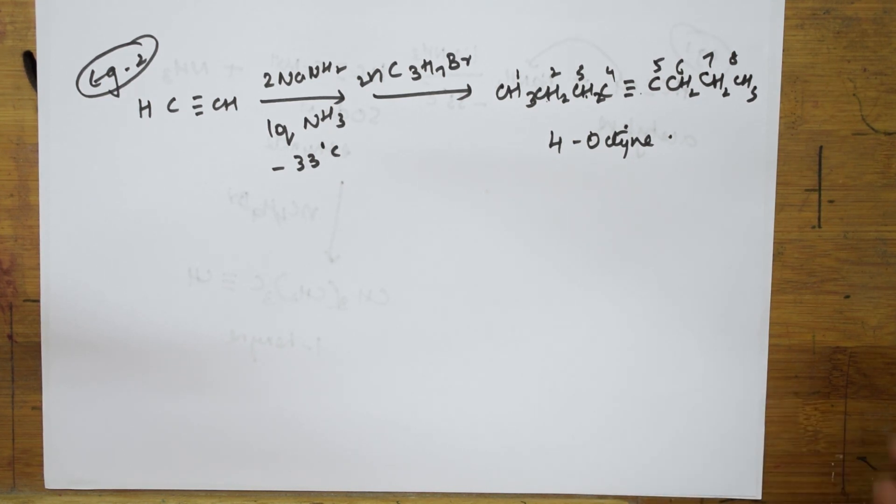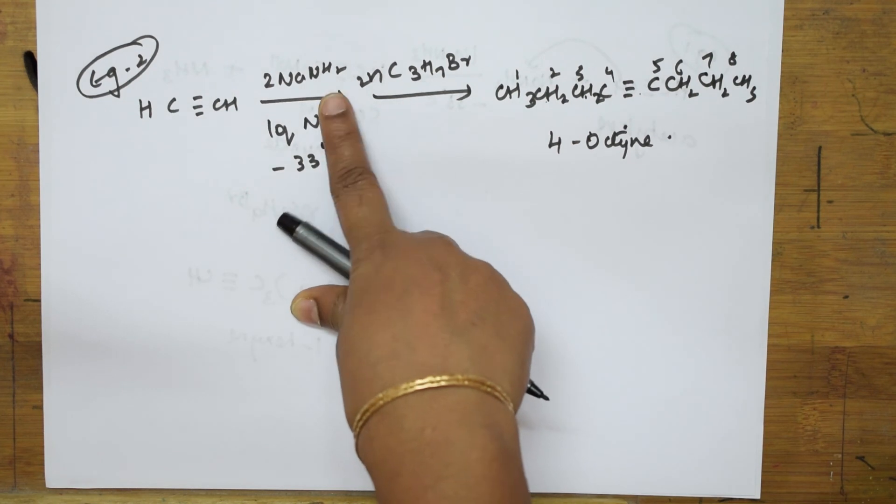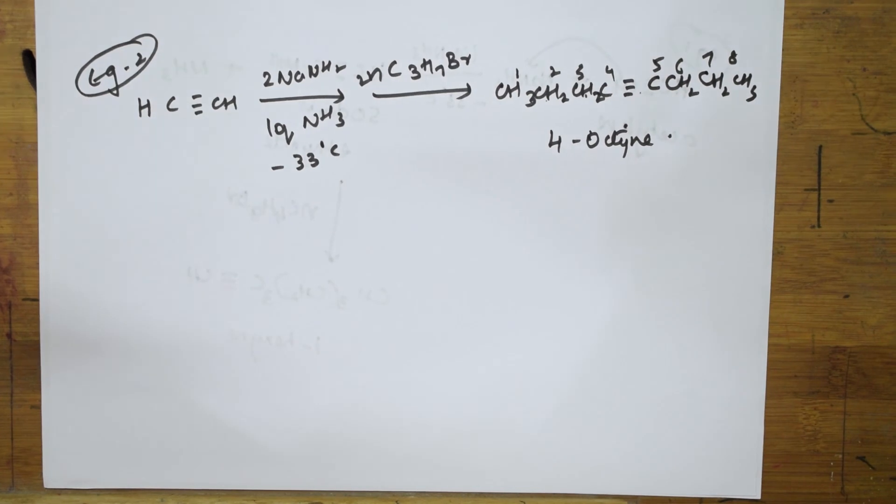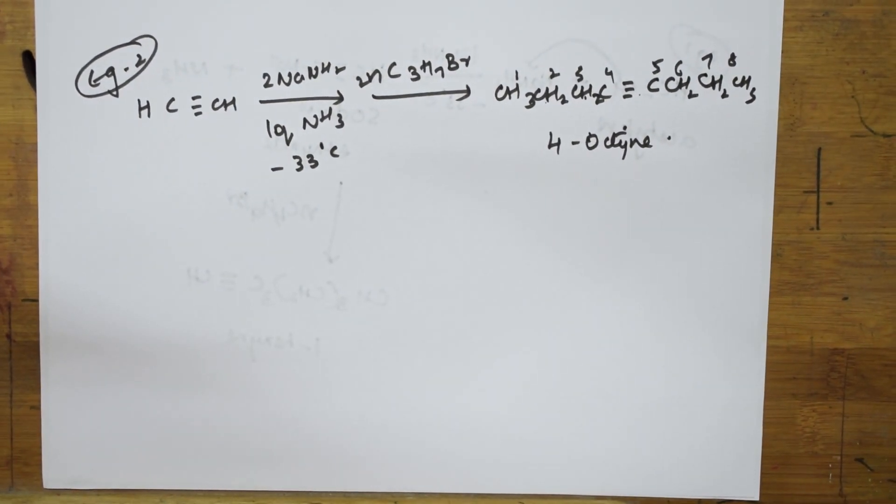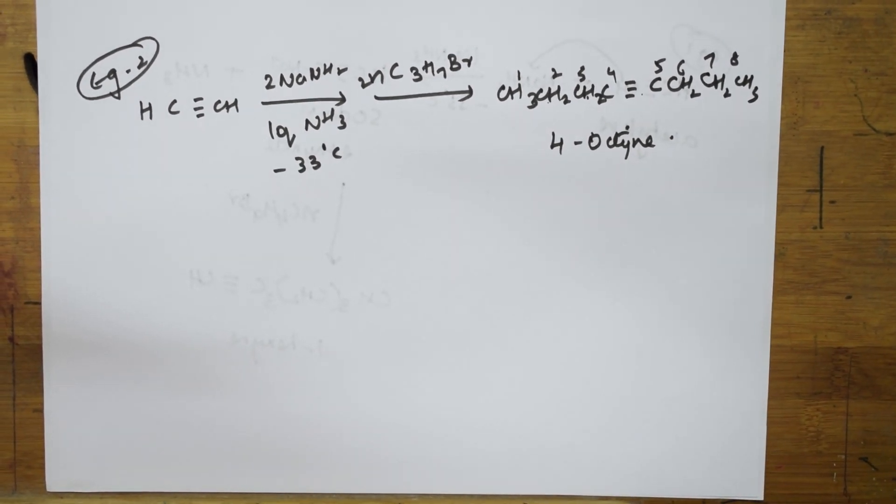If your teacher gives you any other example with a lower alkyne, just take this - whichever chain you're adding, combine the whole thing and write the product. This is the reaction. Thank you for watching students. Let me meet you again with the next preparation of alkyne, the Corey-Fuchs reaction.